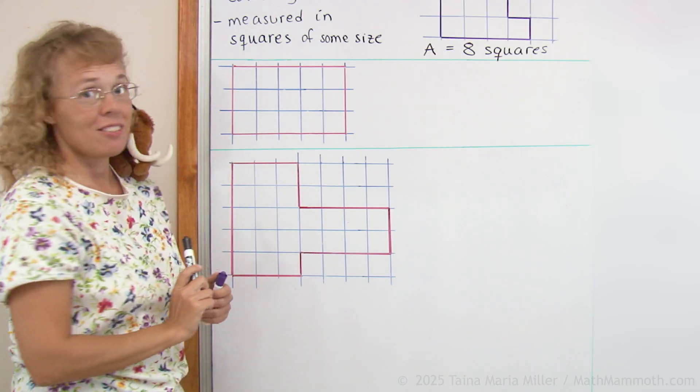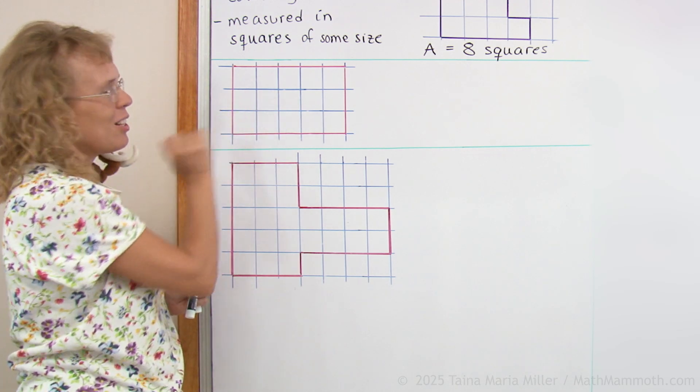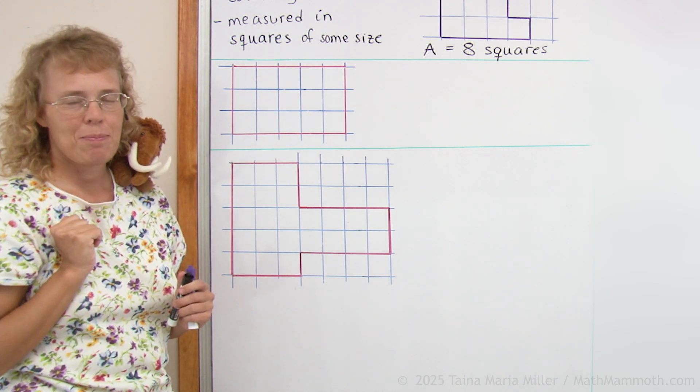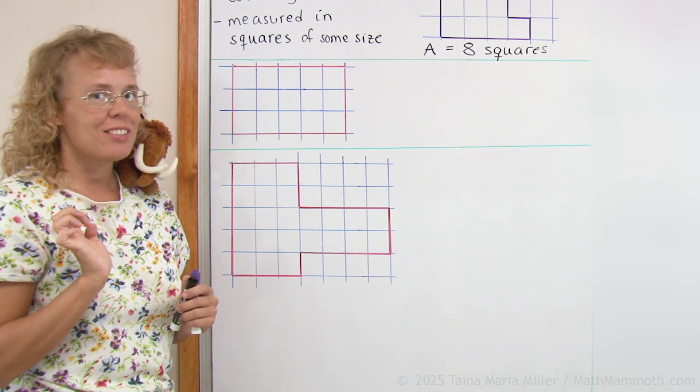How about this shape? It's a rectangle. So it's pretty easy. We could just count those squares inside it. But I also want you to write a multiplication for it, right?